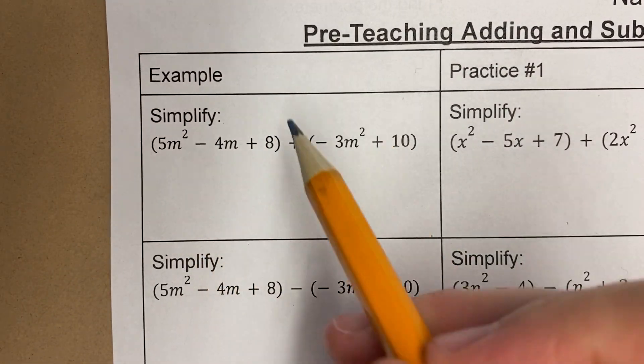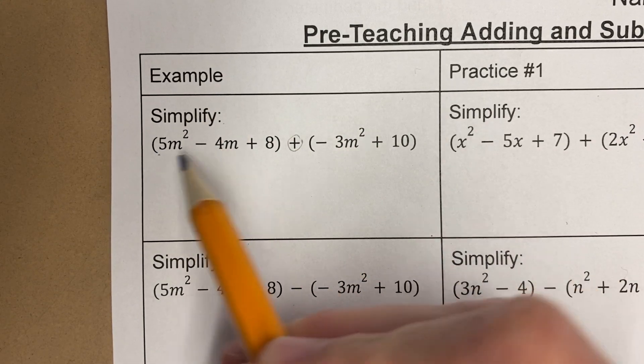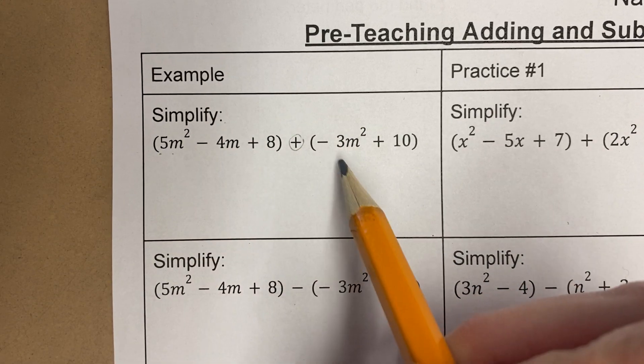If I'm going to simplify this expression, what I observe is that there's a plus sign right here. So I'm just taking all of these terms, one, two, three terms, and adding them with these terms, this term and this term.